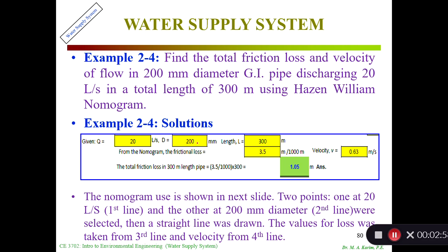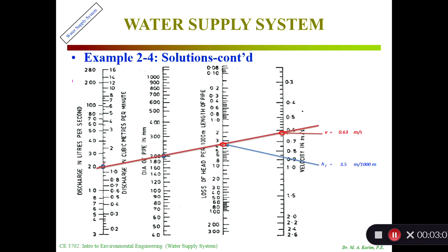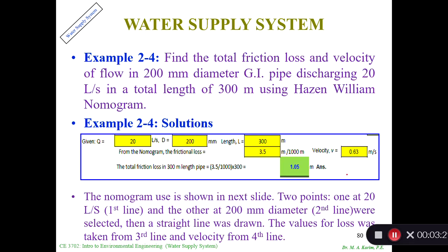Here are the given values: 20 liters per second and 200 millimeters diameter. From the nomogram, if I put here 20 liters per second and 200 millimeters diameter, I get two points. If I add the two points and extend the line as a straight line, I get HF loss of 3.5 meters per 1000 meters and velocity of 0.63 meters per second. That's what I got. I put those values here, from the graph.